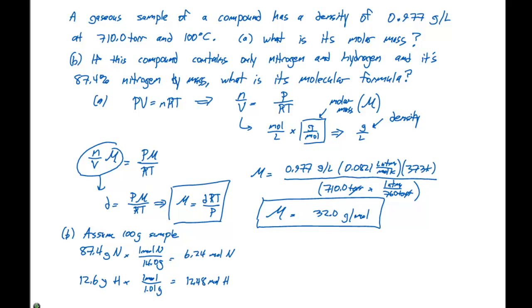We compare these two values, find the smallest one, and divide each by that. We divide each by 6.24, which gives us one mole of nitrogen for every two moles of hydrogen. So our empirical formula is NH2. To determine the empirical formula weight, we know nitrogen is 14 grams per mole and hydrogen is one gram per mole. We have two hydrogens, so we multiply and add to get 16.0 grams per mole for our empirical formula weight.